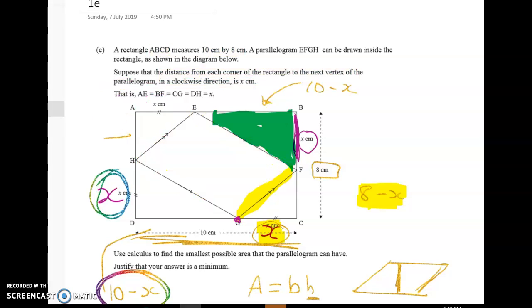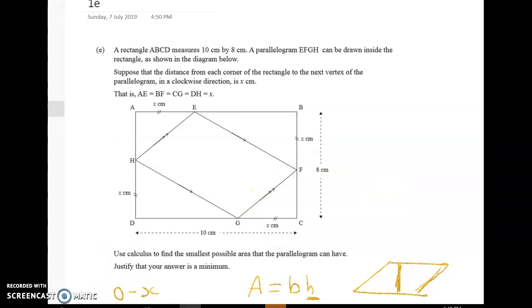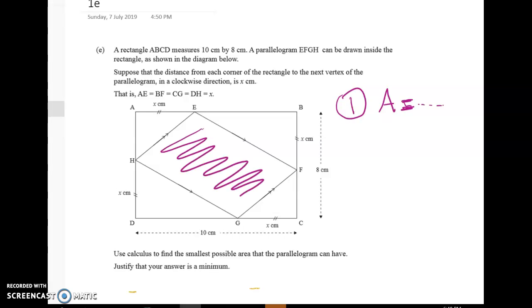All right so first of all we read the question and we read it quite carefully. We marked on some extra dimensions that we didn't have. All right so we were given a good diagram and then we set up an expression for the area. So we got A equals blah blah blah. And in this case we did that not by working directly with the parallelogram but by working with the rectangle minus the bits that we didn't want. And that's quite a nice strategy in harder problems.